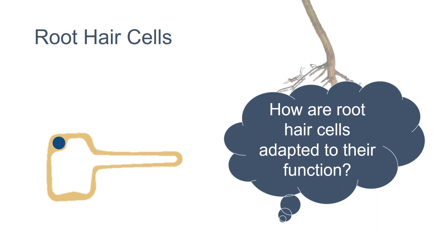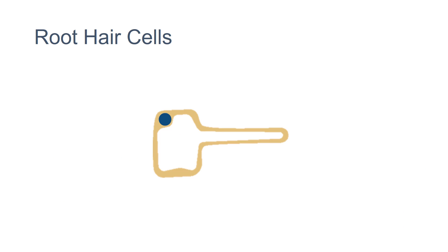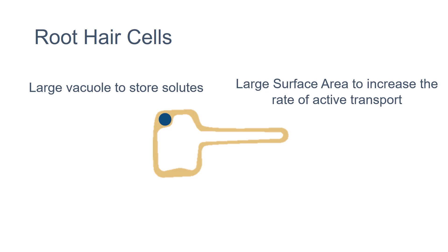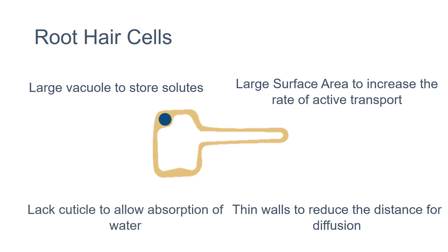The root hair cells are specialized for this function. They have a large vacuole to store solutes, a large surface area to increase the rate of active transport, they have thin walls to reduce the distance for diffusion, and they lack a cuticle which allows them to absorb water easily.